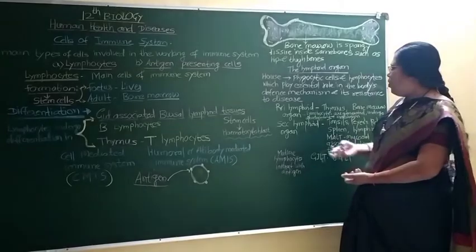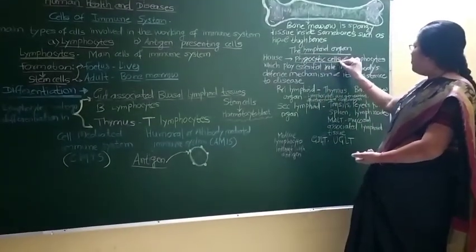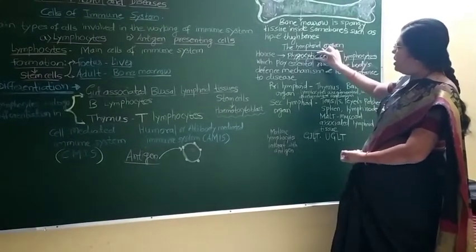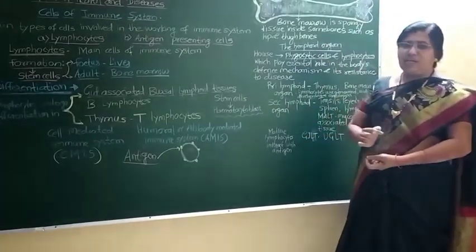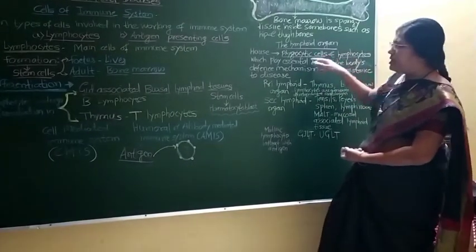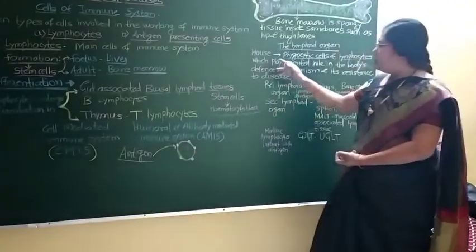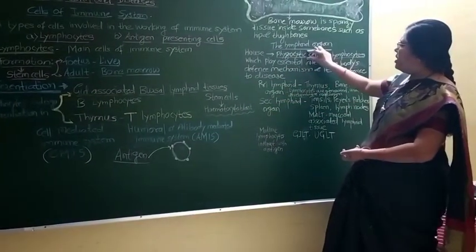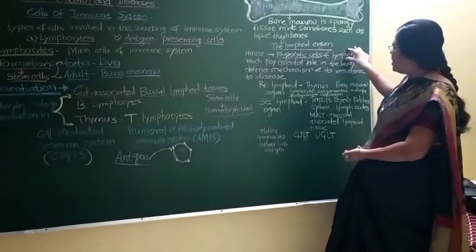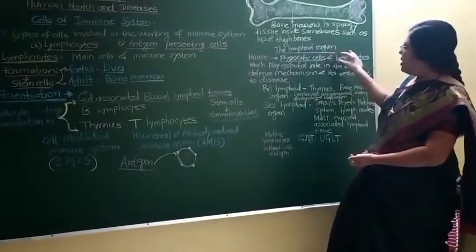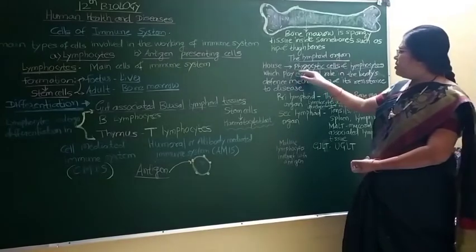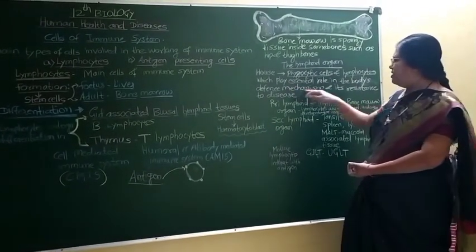The lymphoid organ contains two types of cells: phagocytic cells and lymphocytes. Phagocytic cells are immune cells that engulf foreign particles. Lymphocytes interact with foreign particles. So in the lymphoid organ there are two types of cells — phagocytic cells, which directly engulf foreign material, and lymphocytes, which interact with foreign particles.